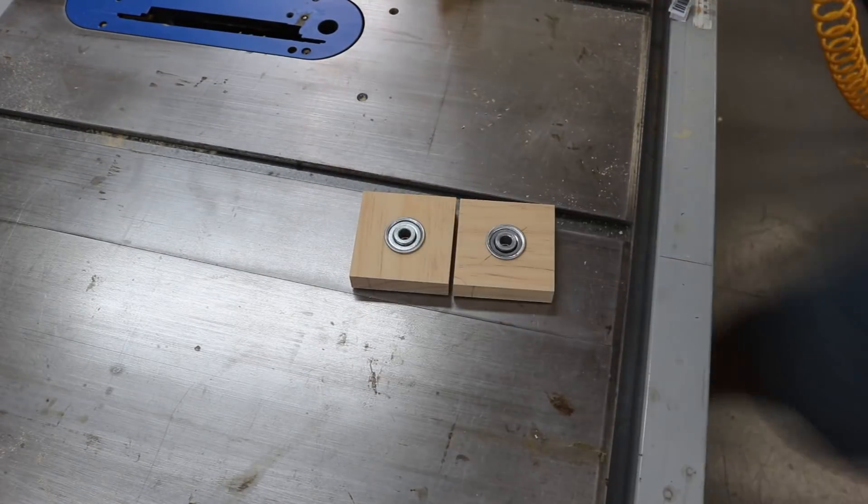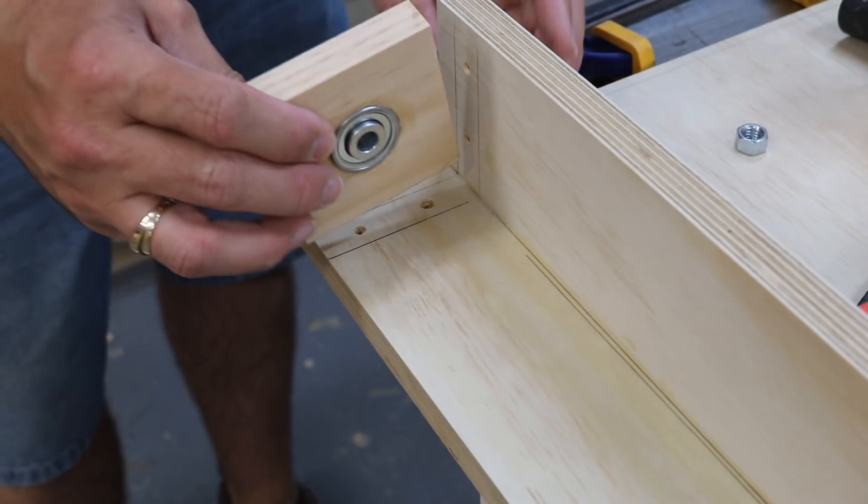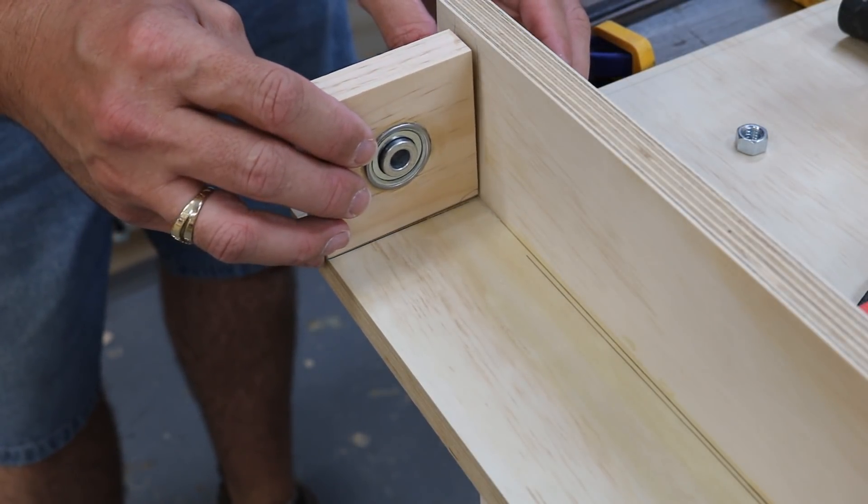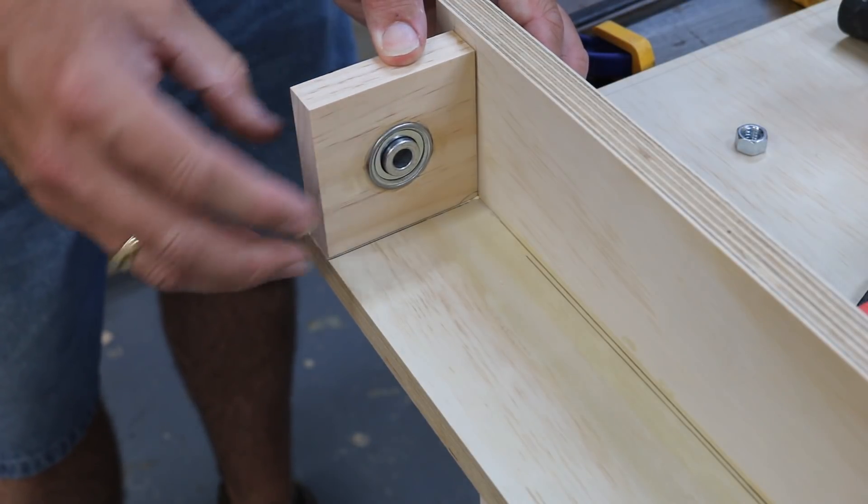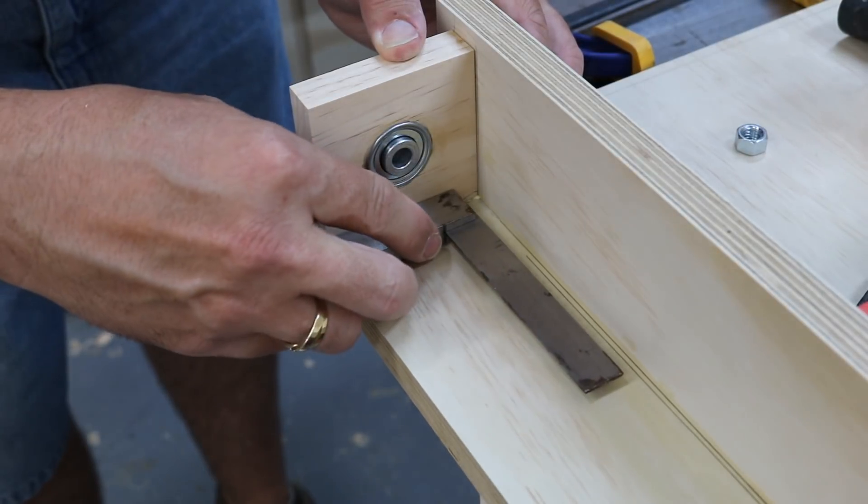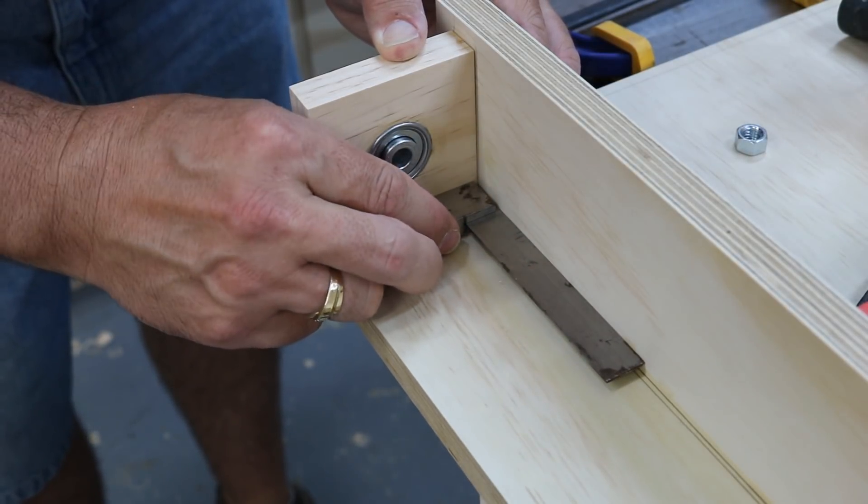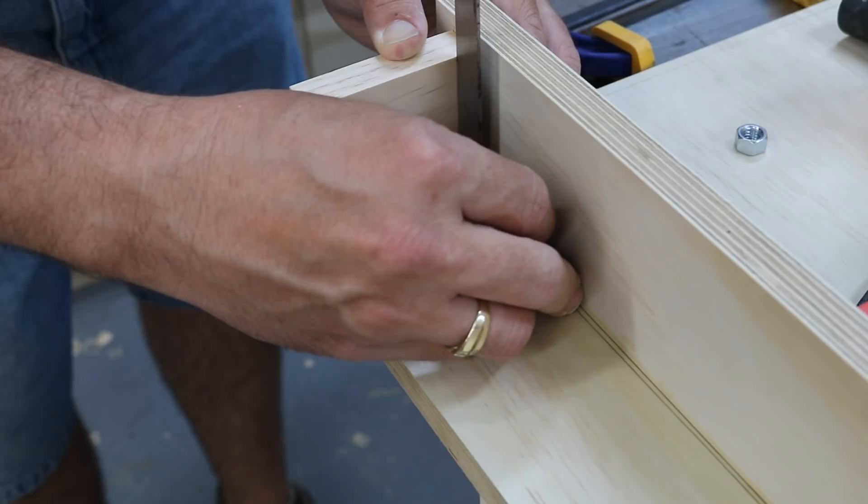Then the end blocks get pushed in to the corners. This also gives support for the fence to keep it 90 degrees. You want to make sure that this block is perfectly 90 degrees to the sled and the fence.